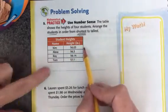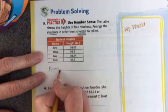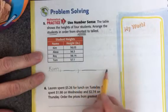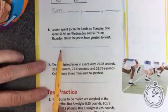I'm not going to write down her height. I'm going to write down her name. Kim's the shortest. And then I'll write the other names in order from shortest to tallest. Let's look at the next one.